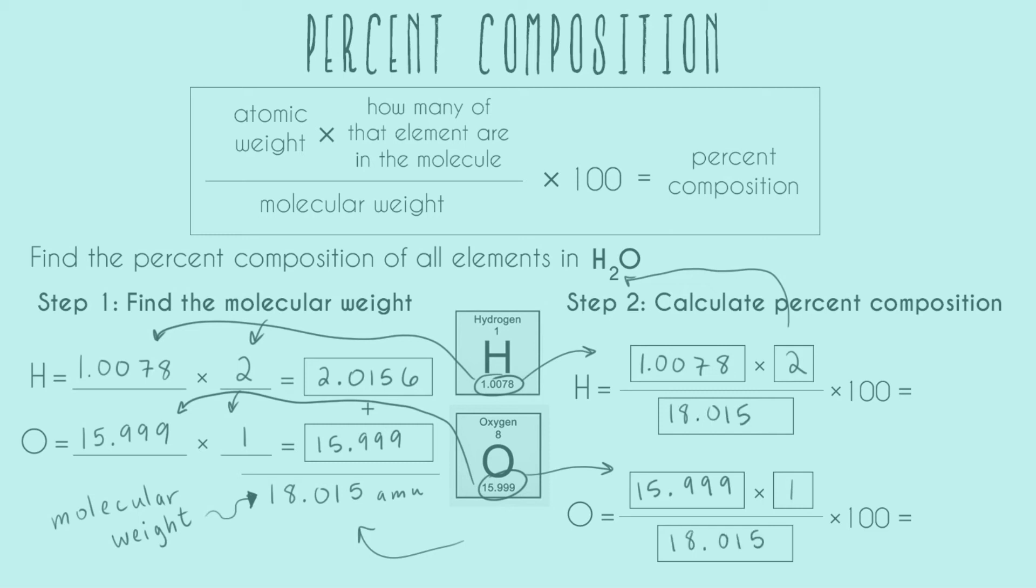Alright, so now we just need to crunch these numbers and do the multiplication. When we do that for H, we get 11.189%, and when we plug in for oxygen, we get 88.811%.